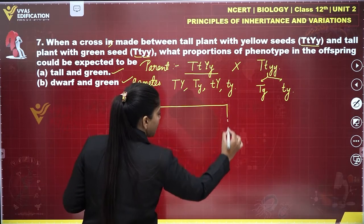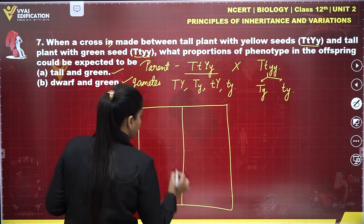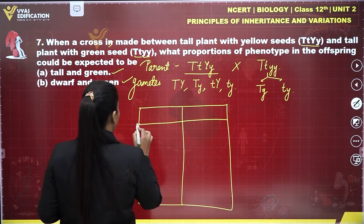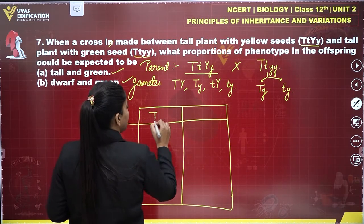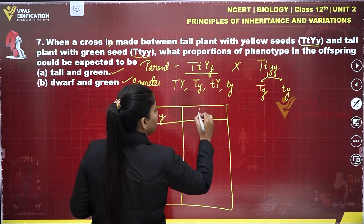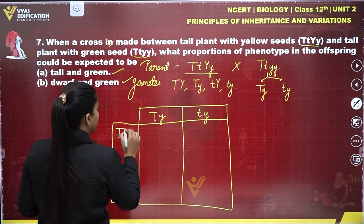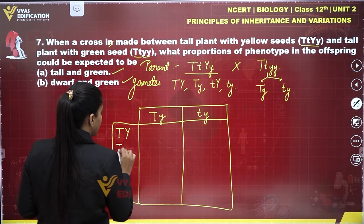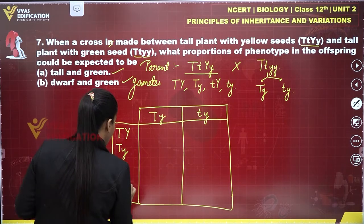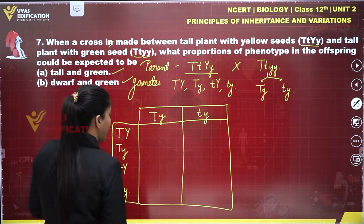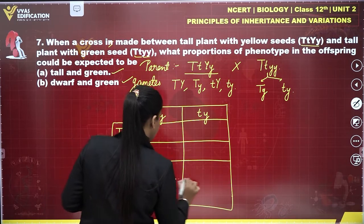Now we are going to make a Punnett square with these gametes and fuse them with each other to obtain results. We write the gametes from the second parent — Ty and ty — along one axis, and the gametes TY, Ty, tY, ty from the first parent along the other.